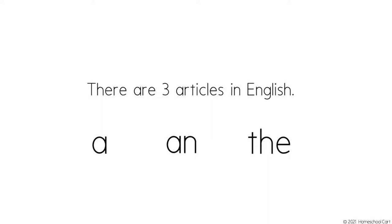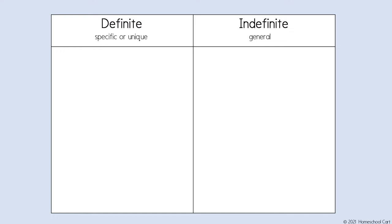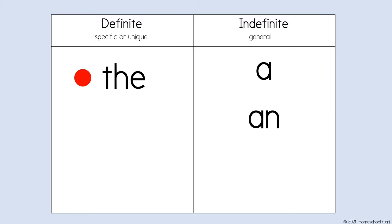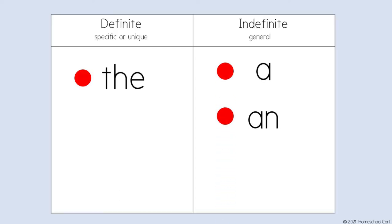We can divide these articles into two categories: definite and indefinite. The belongs to the definite category. A and an belong to the indefinite category. Whenever we refer to a specific or particular thing, we use the article the. Whenever we are talking about a general thing, we use the articles a or an.